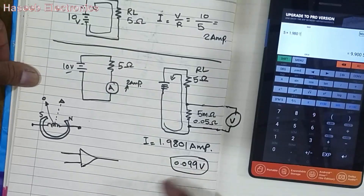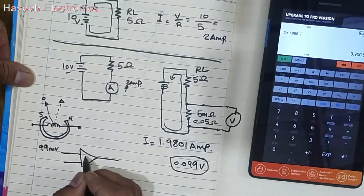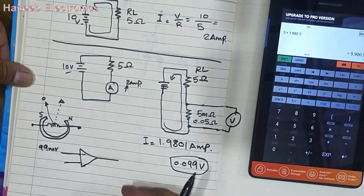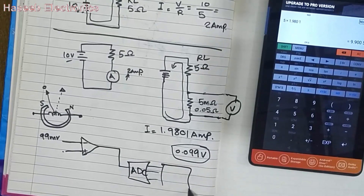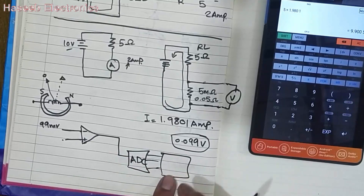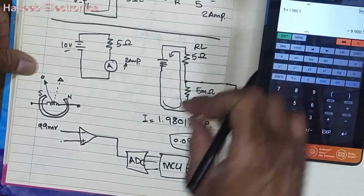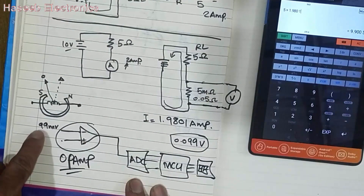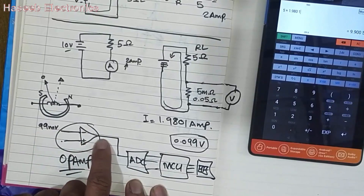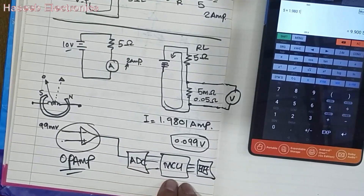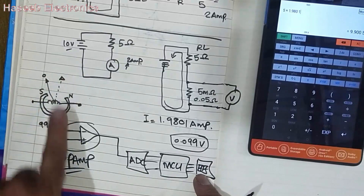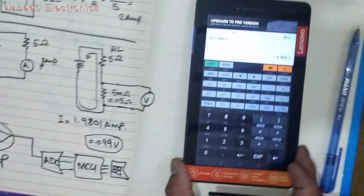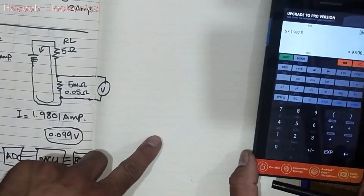These 99 millivolts are applied to the non-inverting or inverting input of an operational amplifier, depending on the design technique. Then these voltages are applied to an ADC — analog-to-digital converter — and then to a microcontroller. Sometimes the ADC function is built into the microcontroller. The operational amplifier amplifies the dropped voltage, sends it to the ADC, then to the microcontroller, and finally displays data on a display — digital or analog.